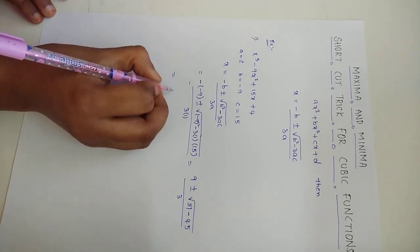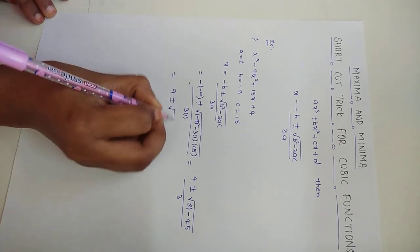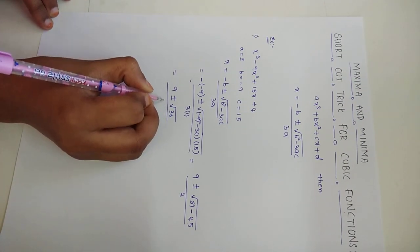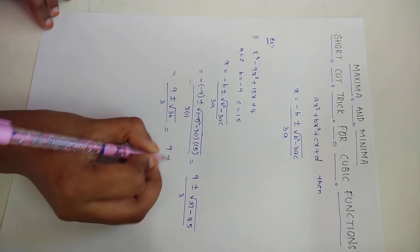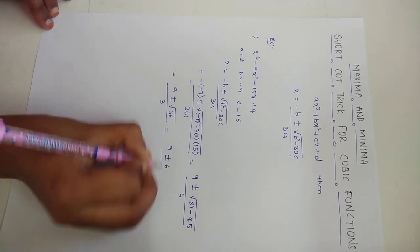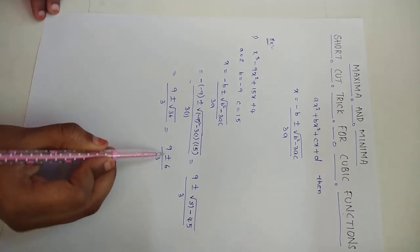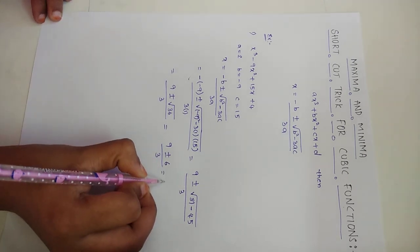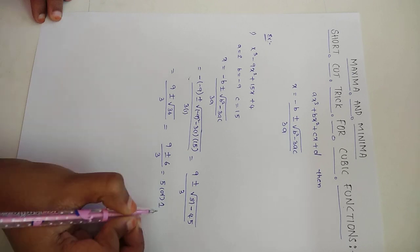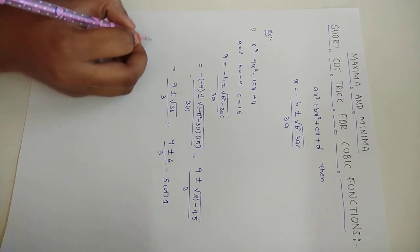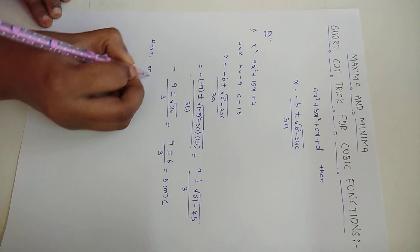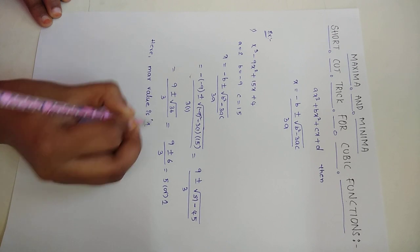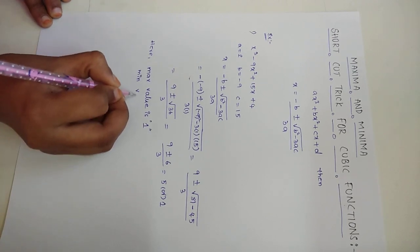This gives us 9 ± √(81 − 45) = 9 ± √36, divided by 3. Since √36 = 6, we get (9 ± 6) / 3. Keeping plus once and minus once, we get the answers as x = 5 or x = 1. So the maximum value occurs at x = 1 and the minimum value occurs at x = 5.